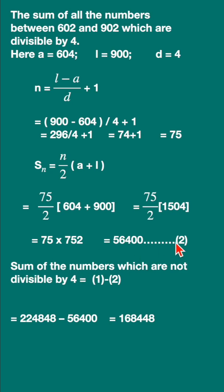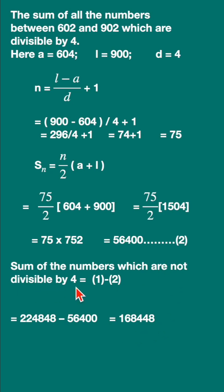Now subtract this value from the previous total sum. You will get the answer — these are the sum of the numbers which are not divisible by 4.